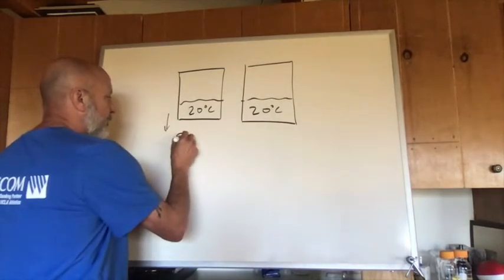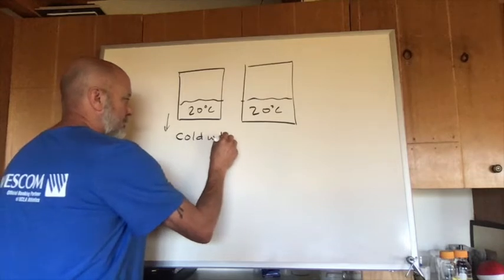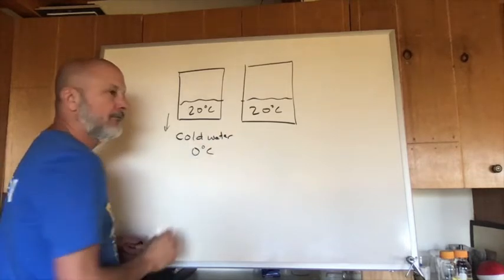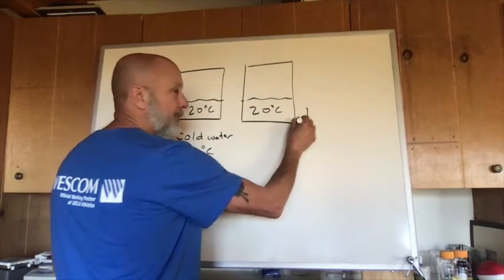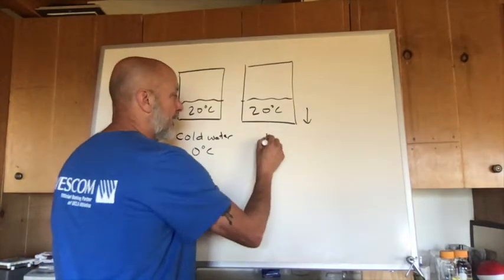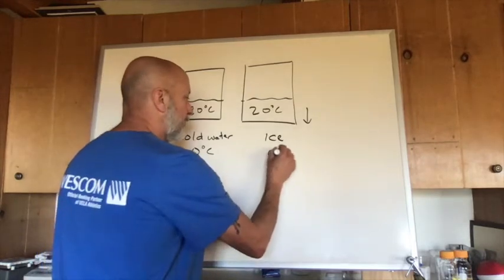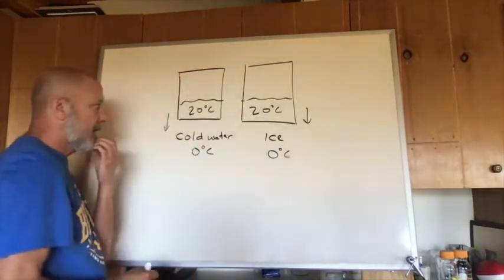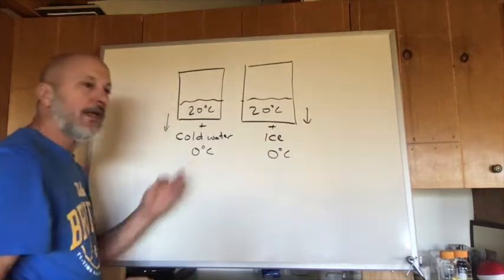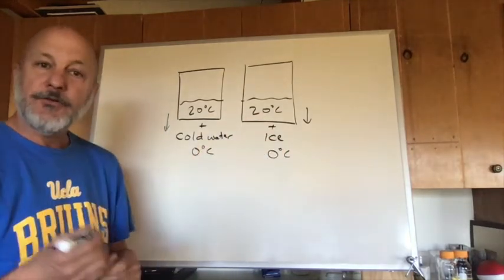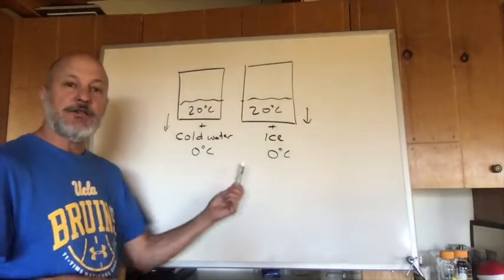In one beaker we add cold water at zero degrees C, and in the other we add ice — solid water — also at zero degrees C. We're going to see a very different temperature change in these two beakers.